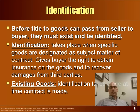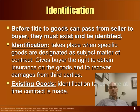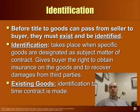Identification really means separating out the goods. For example, we produce a thousand refrigerators and designate a particular batch or single refrigerator for a particular buyer. Before title of the goods can pass from seller to buyer, the goods need to exist and be identified — and note that's an 'and.' Once they're separated and identified as going to that particular buyer, there's a potential for title to pass. Identification takes place when the specific goods are designated as the subject matter of the contract. It gives the buyer the right to obtain insurance on the goods and to recover damages from a third party. If the goods already exist, identification takes place at the time the contract is made.